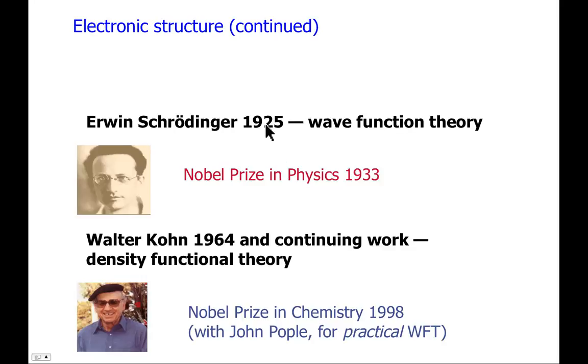So each of these two accomplishments by scientists in the 20th century was tremendously important, and each was awarded with the Nobel Prize. So Schrödinger published his work on wave function theory in 1925, and he was awarded the Nobel Prize in Physics in 1933. Hohenberg and Kohn published in 1964. Kohn was awarded the Nobel Prize, not Hohenberg, in part because Kohn did additional work, some of which we'll see in upcoming lectures. And Kohn shared the Nobel Prize with John Pople, who won it for practical wave function theory. So Schrödinger for the development of wave function theory, Pople for making it actually a sort of everyday tool and figuring out how to do that. In 1998, Kohn and Pople shared the Nobel Prize in Chemistry.